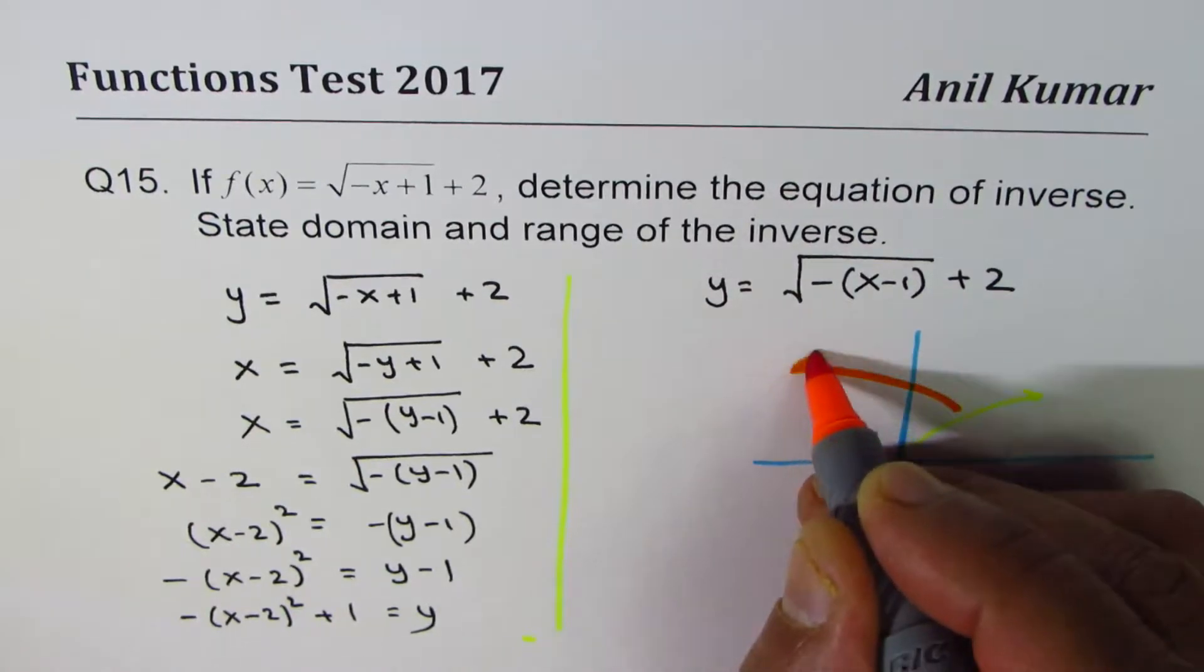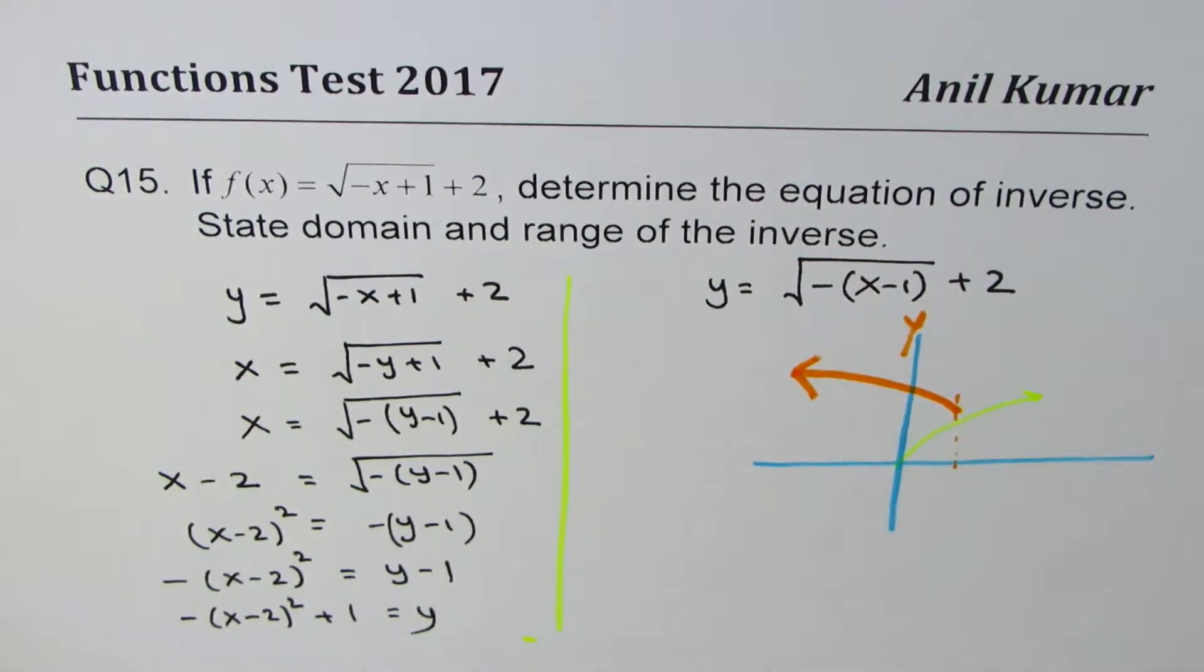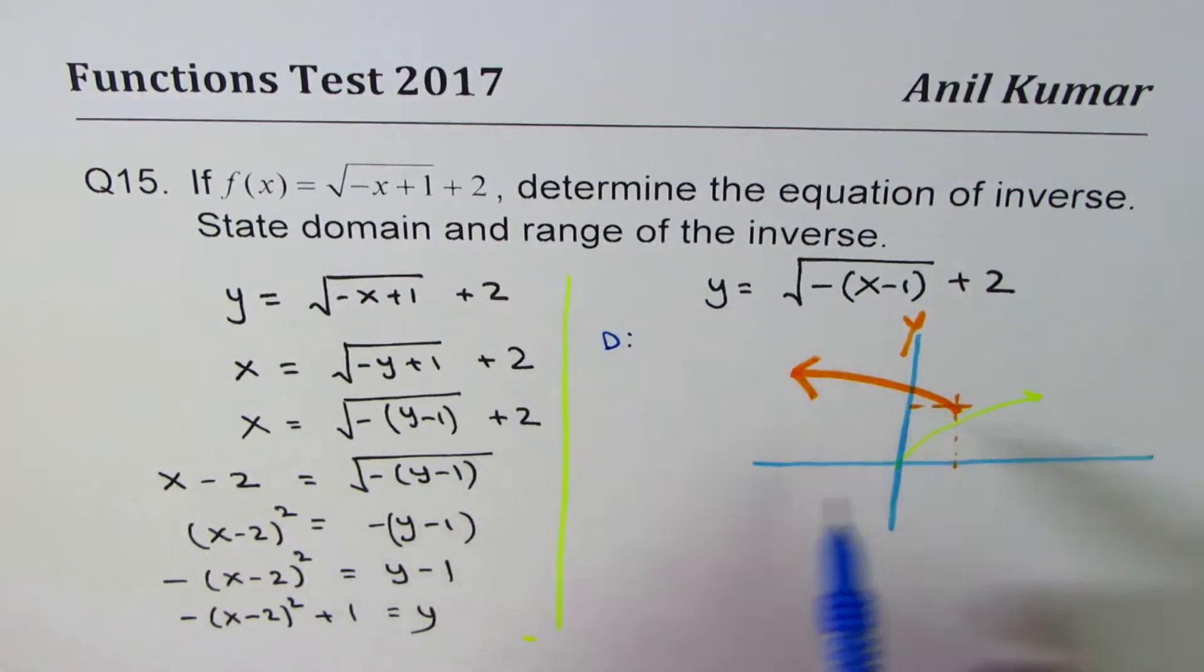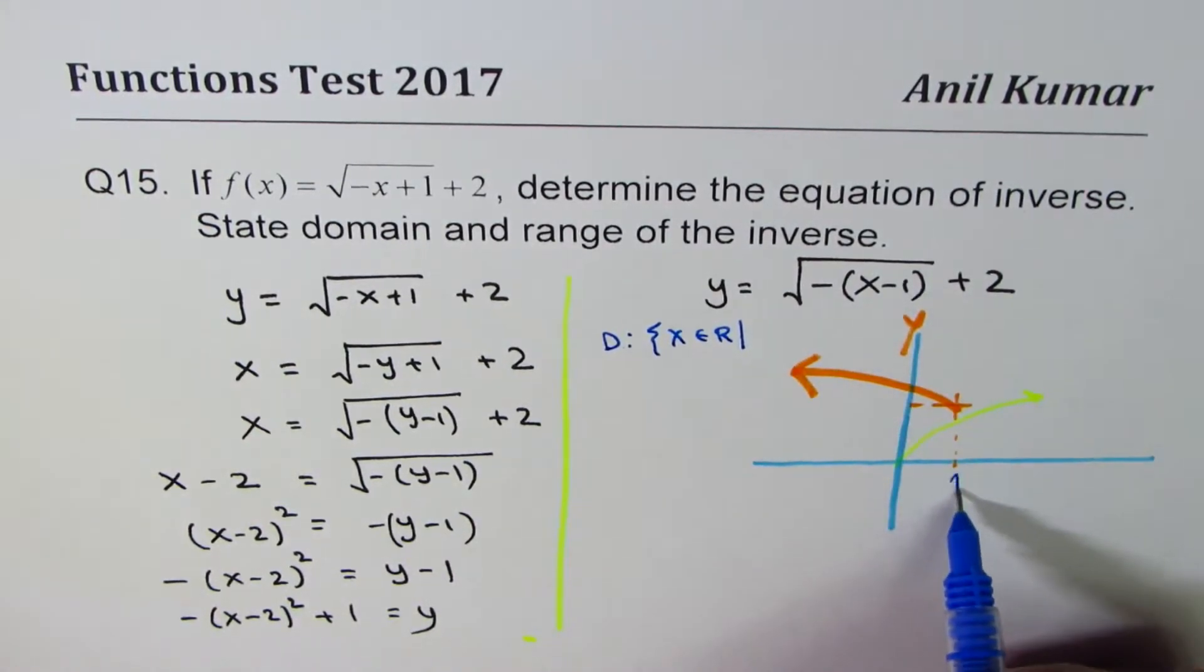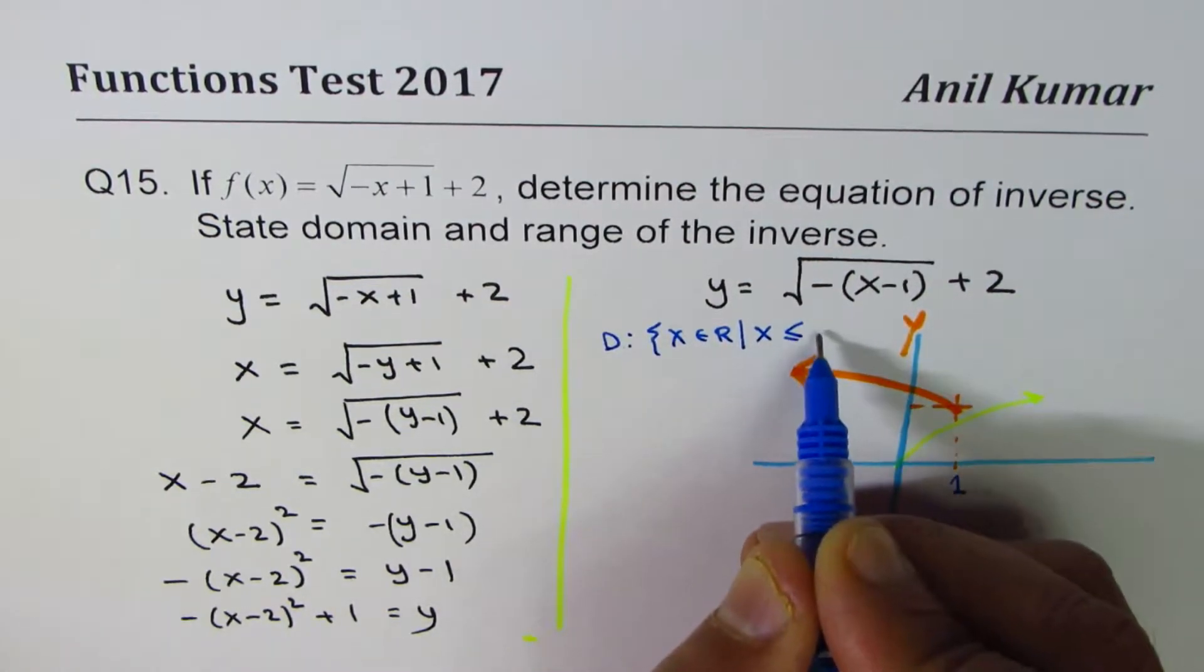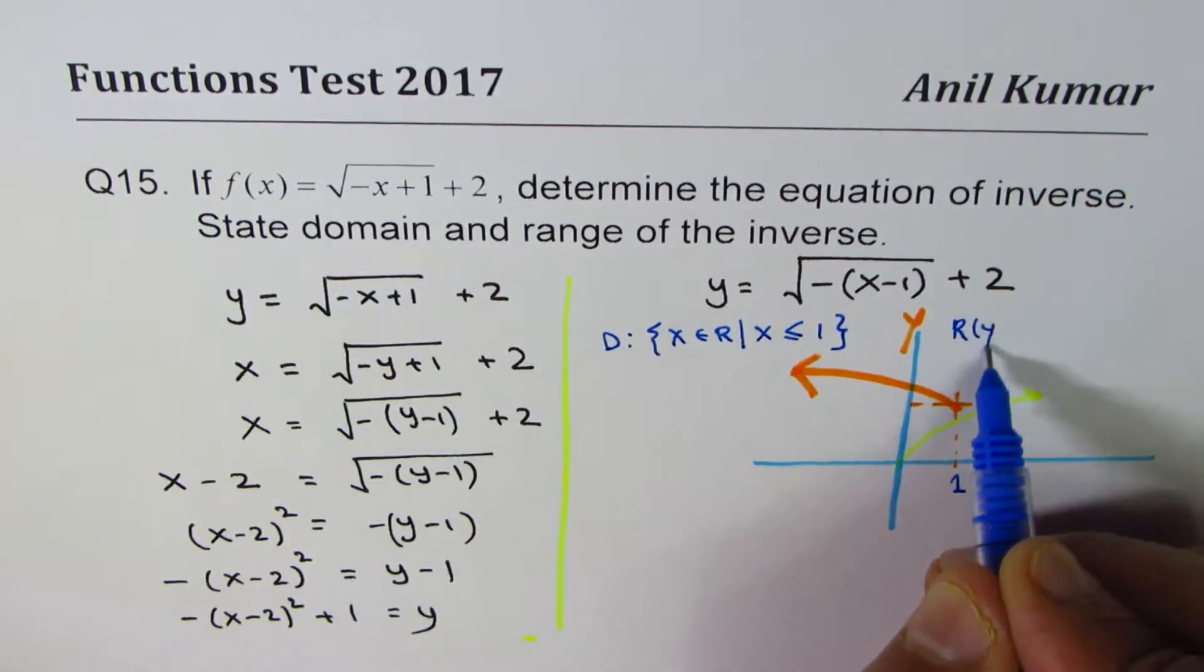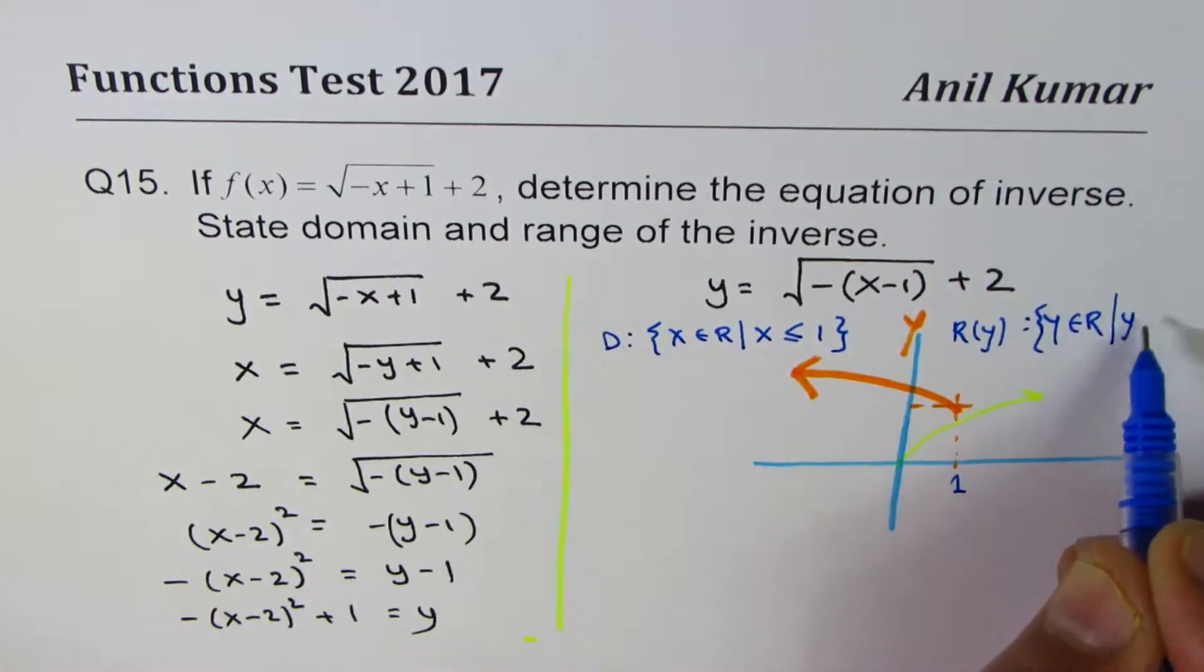Anyway, you don't really have to sketch to find domain and range. For this particular function, the domain of the function is that inside value should be always positive. So we can find domain of this function as x belongs to real numbers, where x is less than equal to 1. As far as the range is concerned, range of this function is y belongs to real numbers, where y is greater than equal to 2.